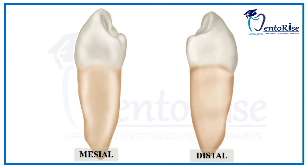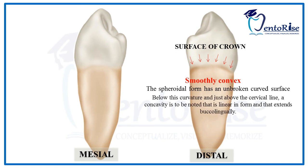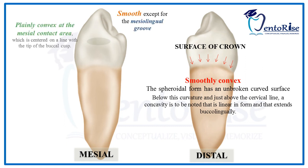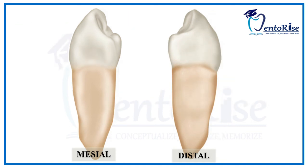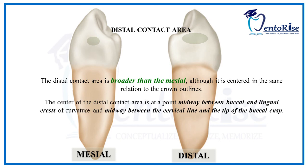The second heading under the distal aspect is the surface of the crown. The surface is smoothly convex with a spheroidal form and an unbroken curved surface. However, just above the cervical line, a slight concavity is noted that is linear in form and extends buccolingually. On the mesial aspect, by contrast, the crown is smooth and convex at the mesial contact area, but a concavity is present above the cervical line and below the mesial contact area. The distal contact area is broader than the mesial contact area, and its center is at a point midway between the buccal and lingual crests and midway between the cervical line and the tip of the buccal cusp.